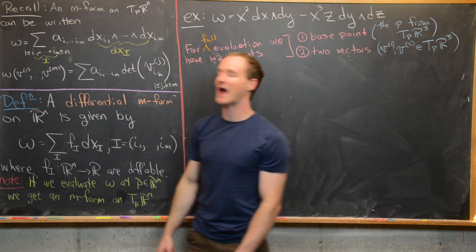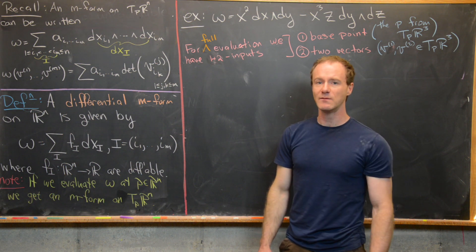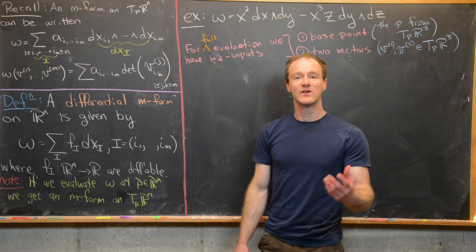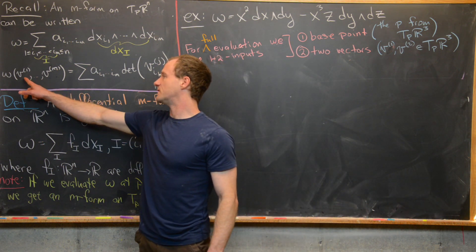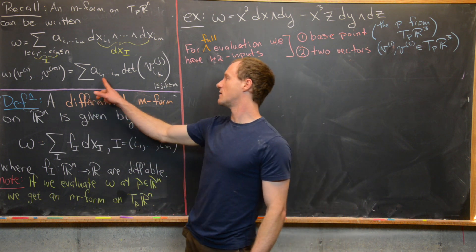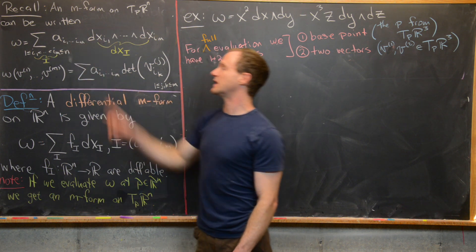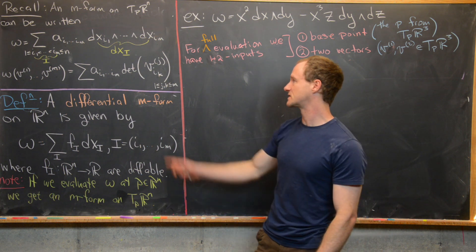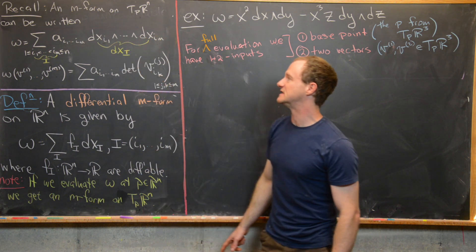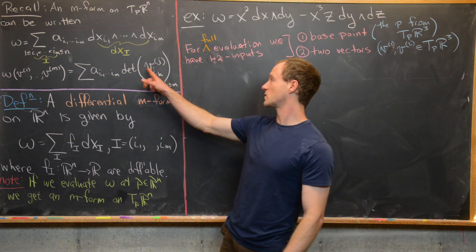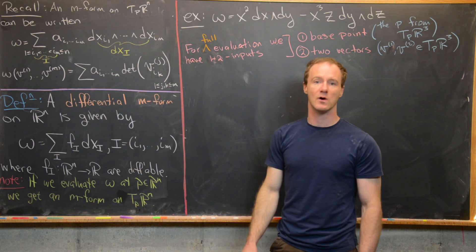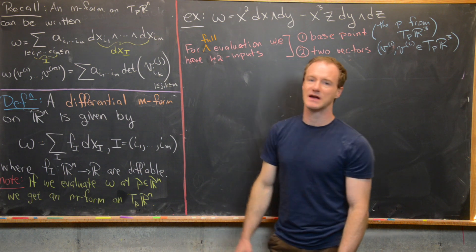An M-form is defined as a function from M copies of T_p(R^n) to the real numbers. The function acts on vectors V^1 up to V^M — all n-dimensional vectors from the tangent space — giving the sum over those coefficients times the determinant of an M by M matrix, where the rows are given by the original vectors and the columns are given by the subscripts i_1 up to i_M. So we've got an M by M matrix and we can take its determinant.